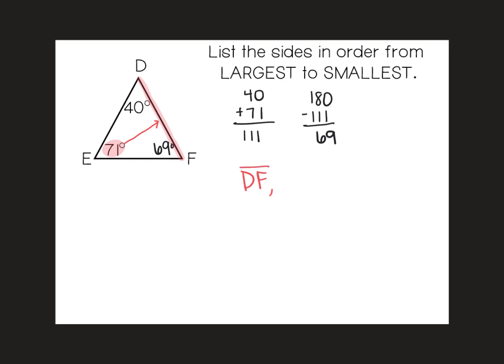The second largest angle is 69 degrees. Across from 69 is the second largest side, which is DE. And lastly, our smallest angle is 40 degrees. Across from 40 is side EF, and that's our smallest side.